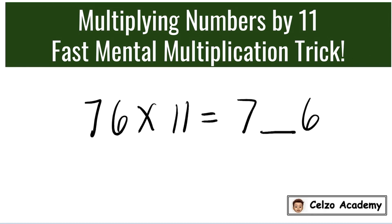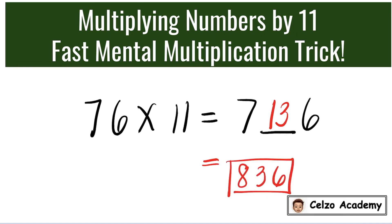The sum of 7 and 6 is 13, so we would put 7, 13, 6 — but that's not the final answer. The final answer is 836. We copy the 6, we copy the 3, but the 7 and the 1 we need to add together: 7 plus 1 is 8. So the answer is 836.